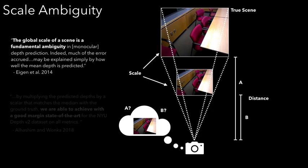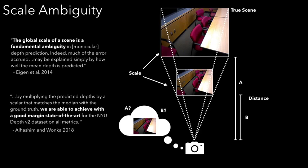Previous work has shown that giving monocular depth estimators access to ground truth depth statistics improves their performance, but such statistics are not usually available in practice.